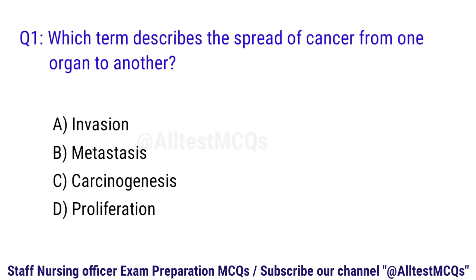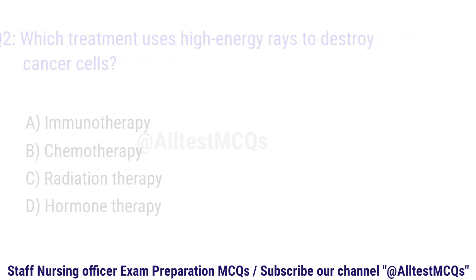Q1. Which term describes the spread of cancer from one organ to another? The correct option is B. Metastasis.